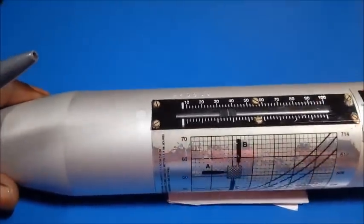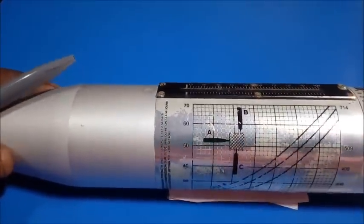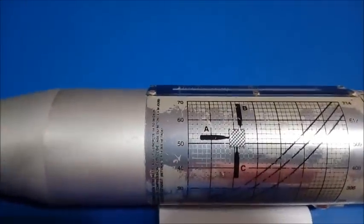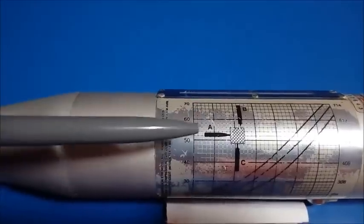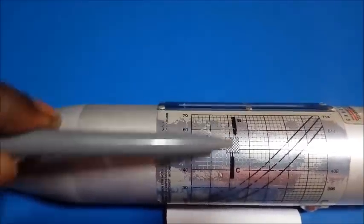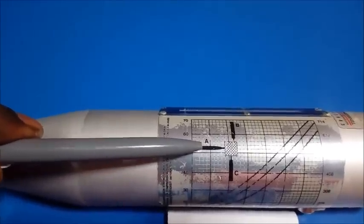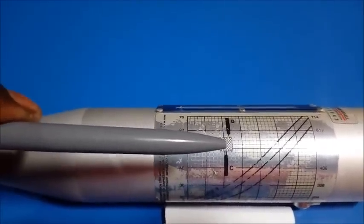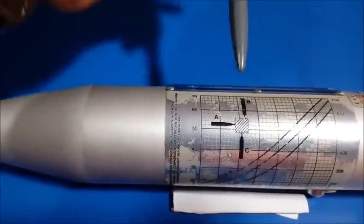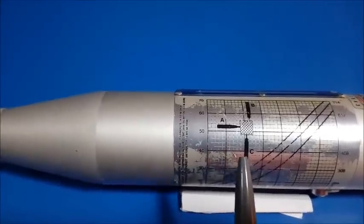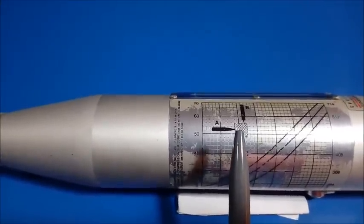So according to that we have to refer the graph which is at the back side. Scale A mentions horizontal load application. This is for vertical testing. And C scale is for upper vertical testing.